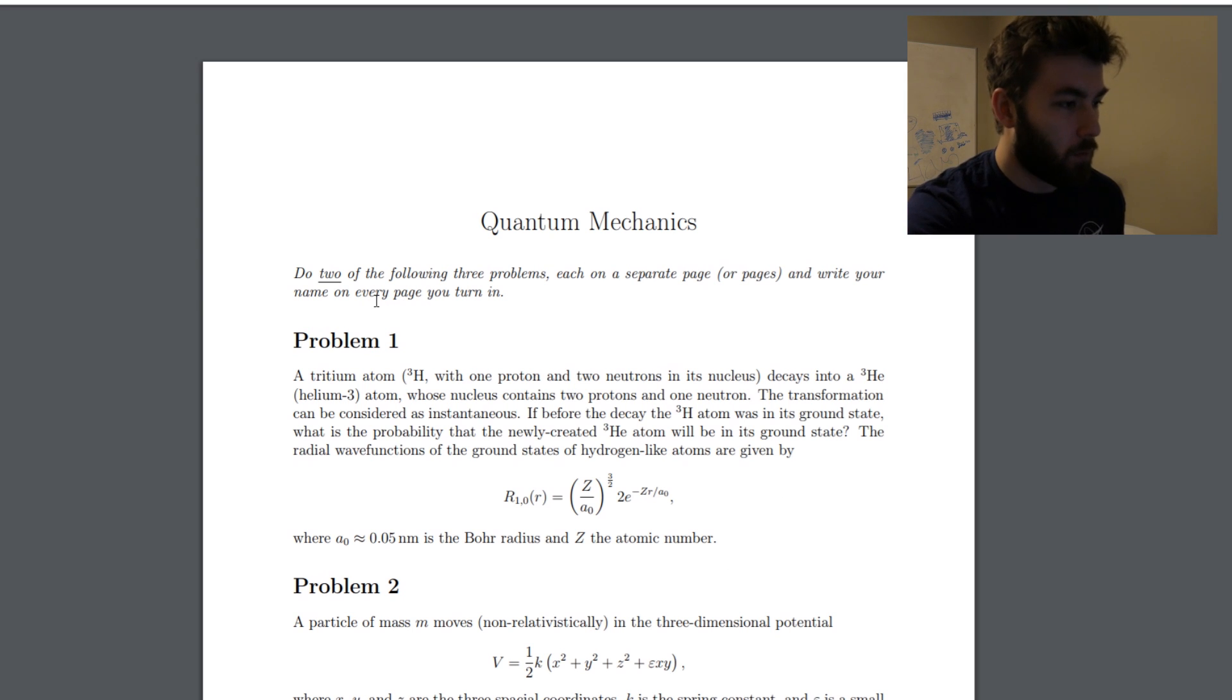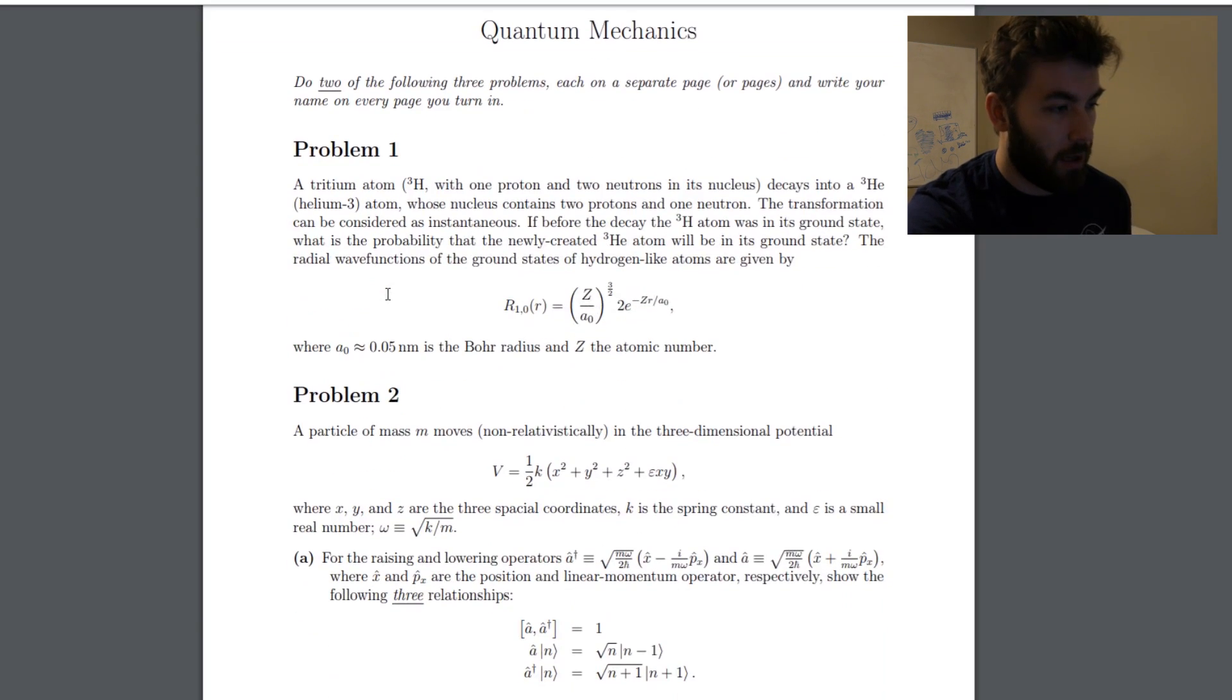If we look at this quantum mechanics one: do two of the following three problems, each on a separate page or pages, and write your name on every page you turn in. A tritium atom with one proton, two neutrons, and its nucleus decays into one whose nucleus contains two protons and one neutron.